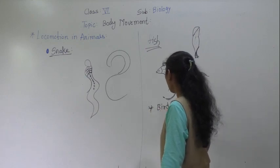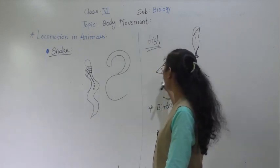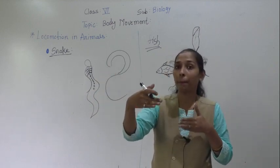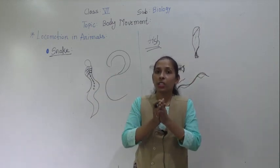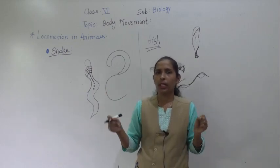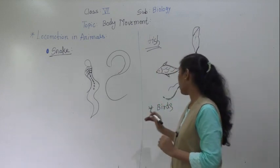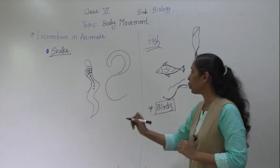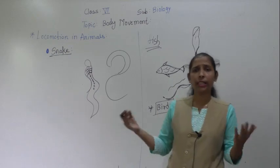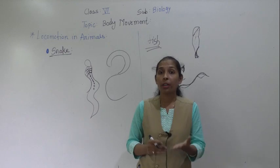Like a fish, aeroplanes, boats, and ships also have a streamline body — tapered at the ends and bigger in the middle — because that boat-like shape helps them to move easily through water or air. Now we will discuss locomotion in birds.